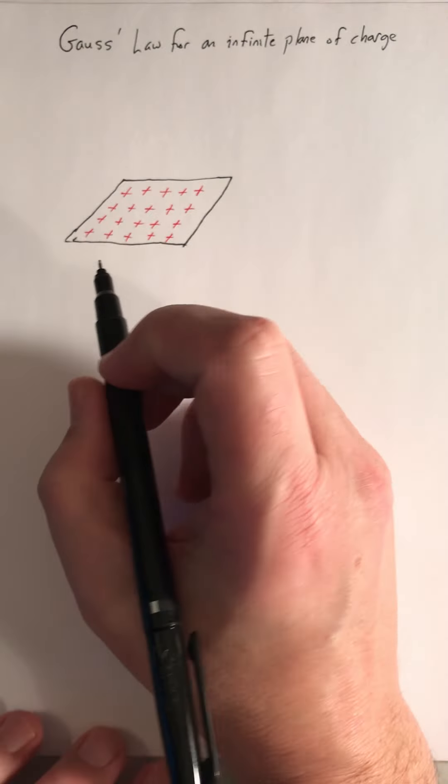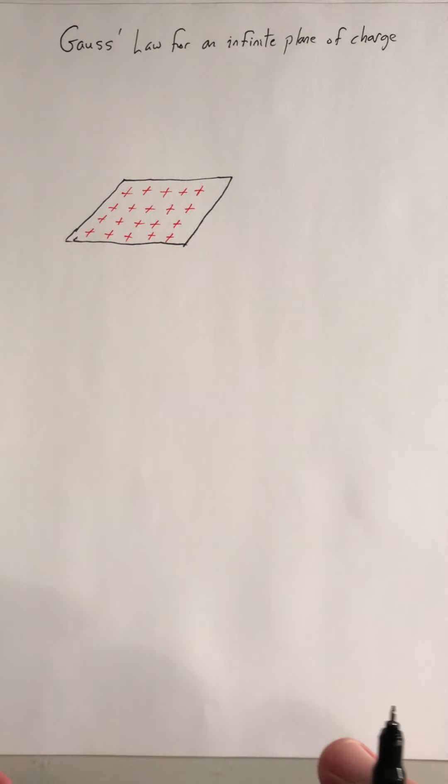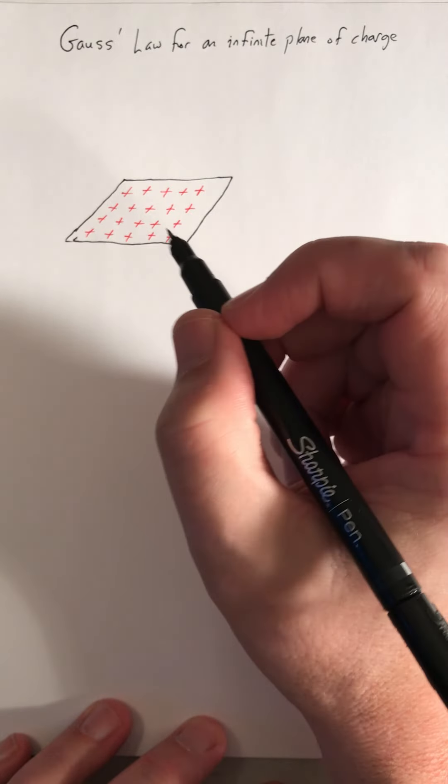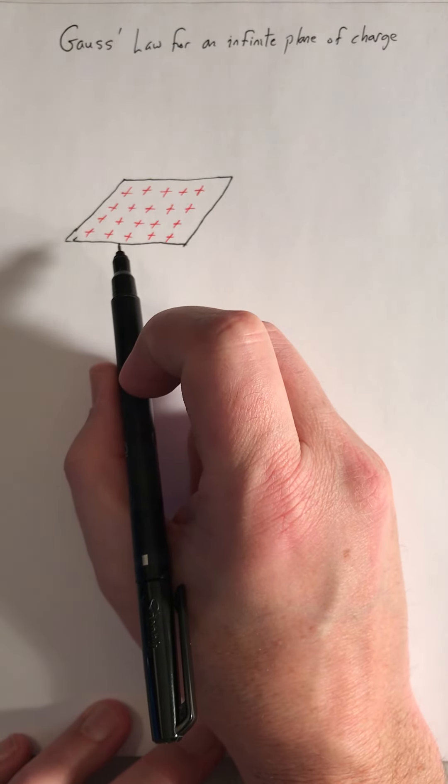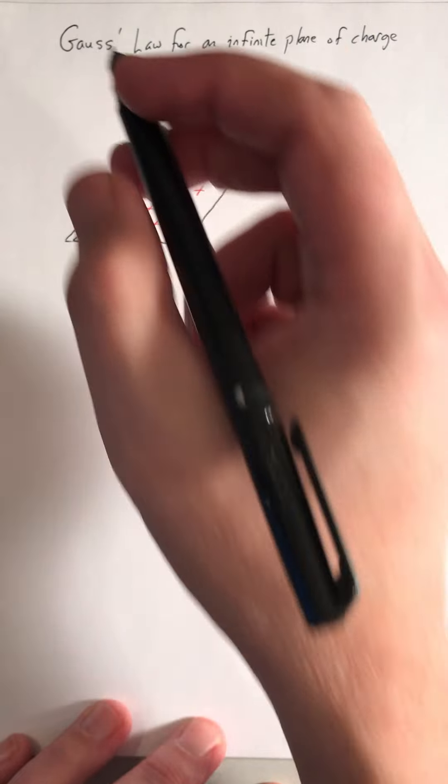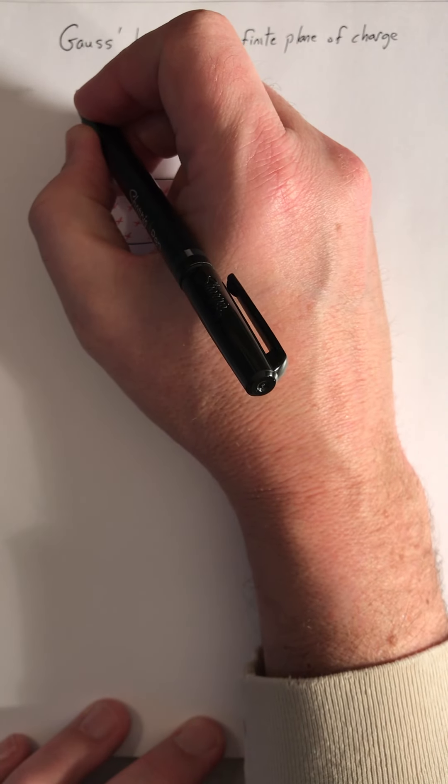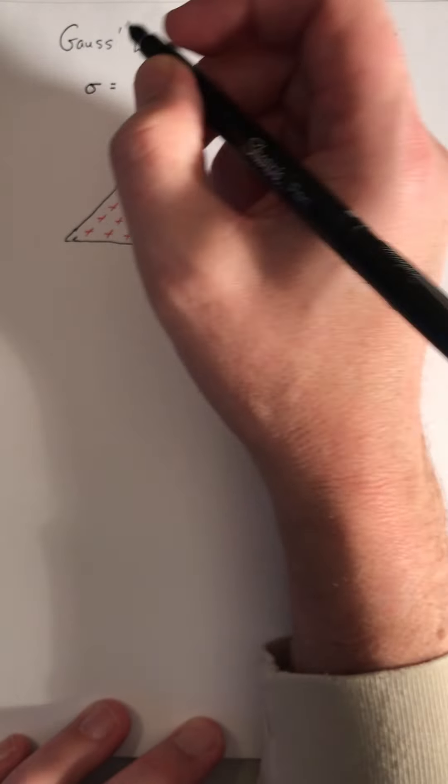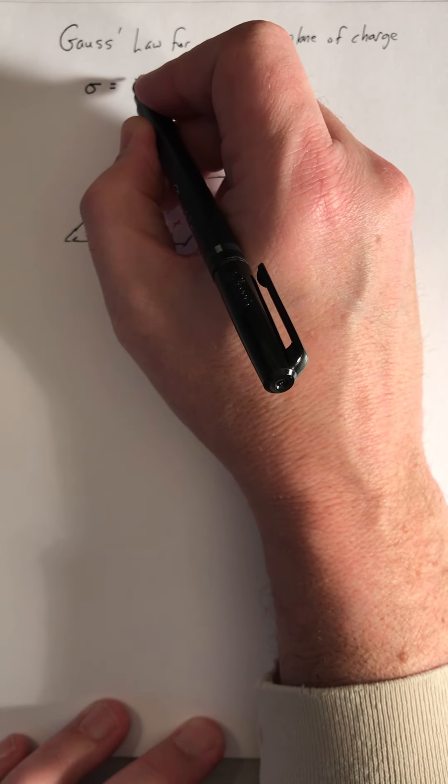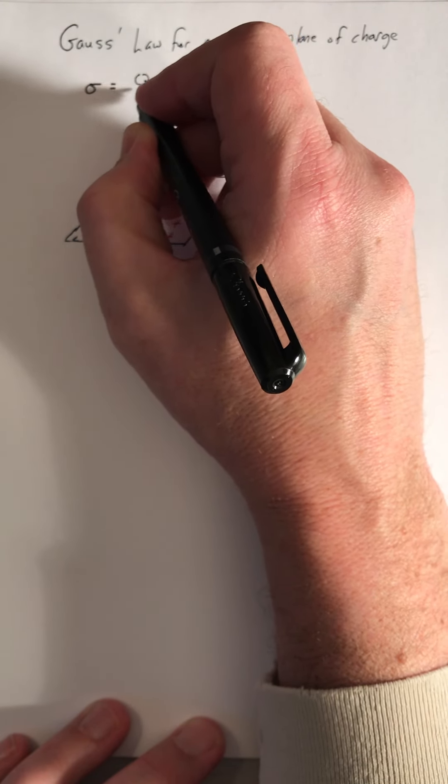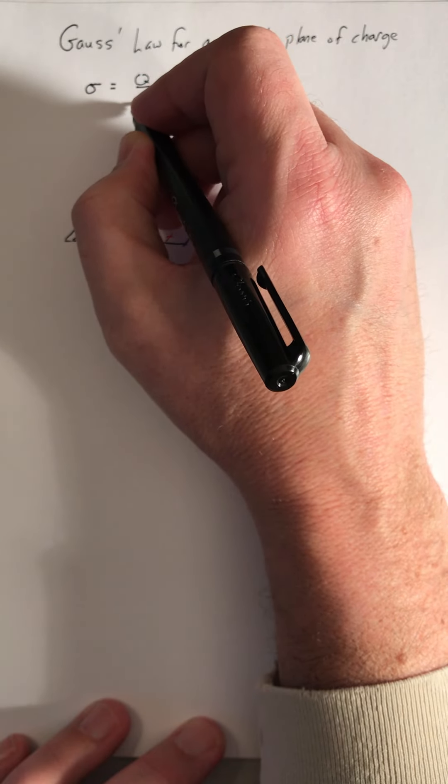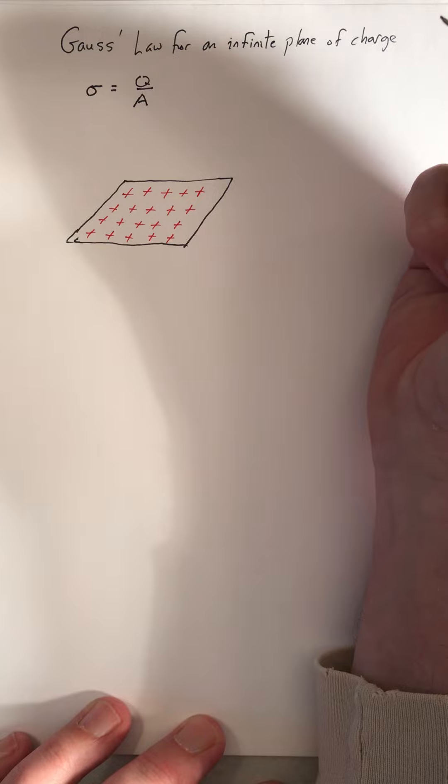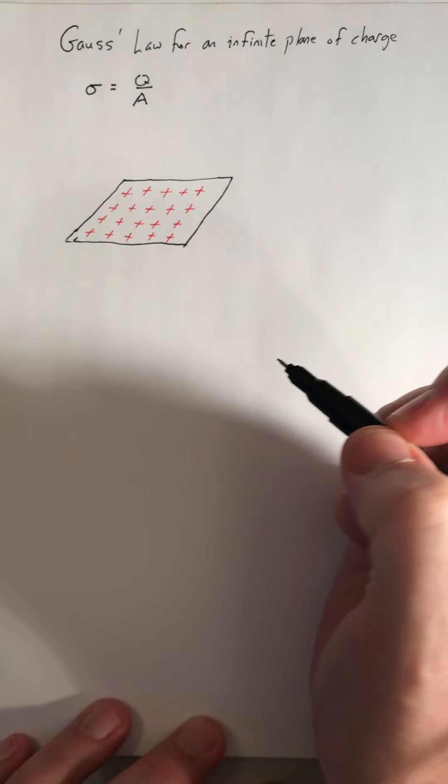Alright, so to apply Gauss's law, I'm going to specify that this is an infinite sheet of charge that has a uniform surface charge density. So the surface charge density sigma is going to be the ratio of the total charge on the sheet to the total area. Both of those Q and A are both infinite but their ratio will be finite.